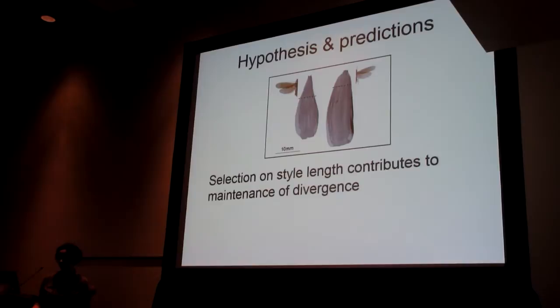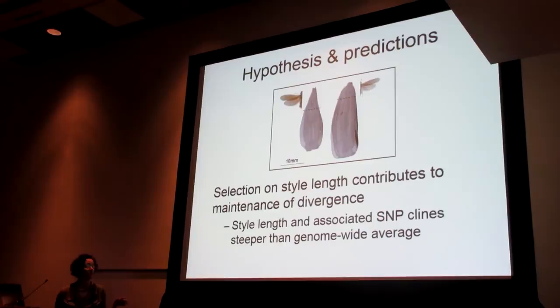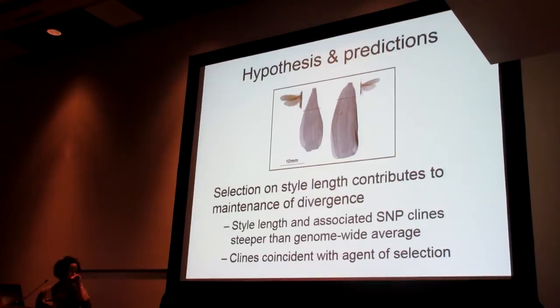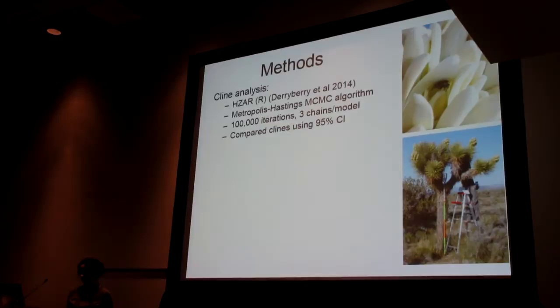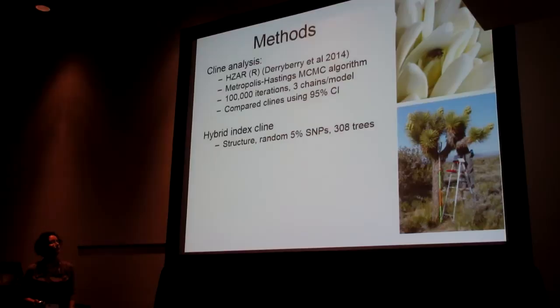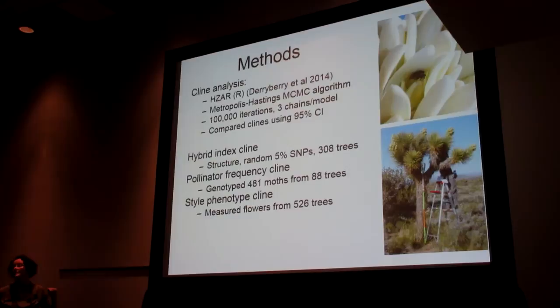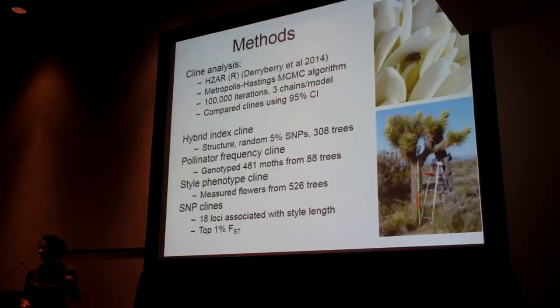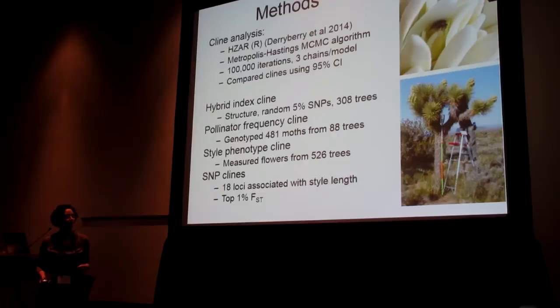Getting back to our Joshua trees: we hypothesize that moth-mediated selection on style length is contributing to the maintenance of divergence. If this is true, we expect clines for style length and the associated SNPs to be steeper than the genomic average. We also expect those clines to coincide with the agent of selection — in this case, the frequency of the moth pollinators. We performed this cline analysis using the package HZAR in R, comparing clines using 95% credible intervals where non-overlapping intervals indicate significantly different parameters. I'll show you the hybrid index cline as reference, then the pollinator frequency cline as our putative selective agent, then the phenotypic style cline, and finally the SNP clines — both the GWAS-associated loci and the top 1% most differentiated SNPs between the two species.